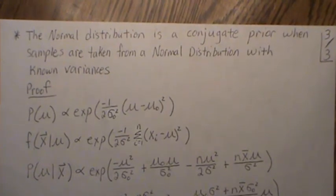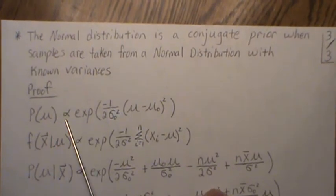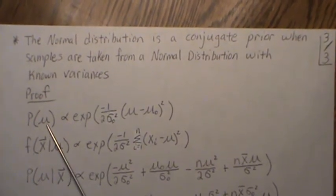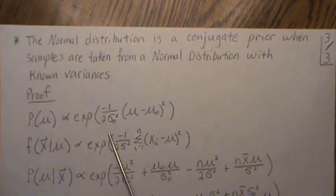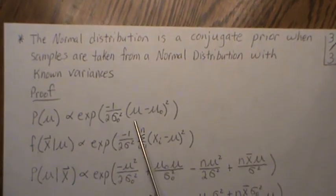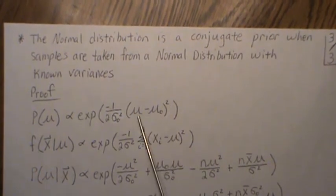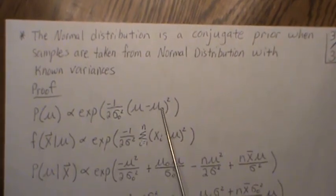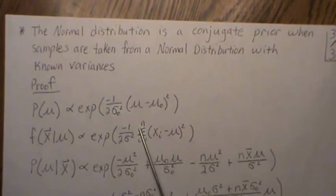Theorem three: the normal distribution is a conjugate prior when samples are taken from a normal distribution with known variances. In this example we assume the variances are known. The prior distribution is proportional to its normal form. An interesting point: we're interested in mu, so other terms are constants. If we multiply out the squared term, we get mu squared minus two mu times mu-naught plus mu-naught squared. We can factor out the mu-naught squared term and call the rest proportional to the key terms.